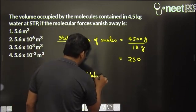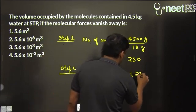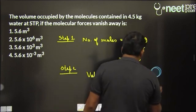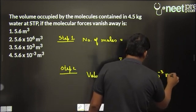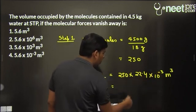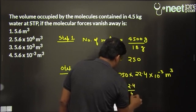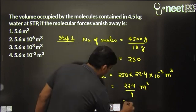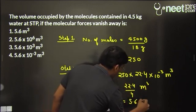So volume would be 250 into 22.4 liters. Now let us convert this liter into meter cube, into 10 to the power minus 3 meter cube. Now we have 250 divided by 1000, that means 1 by 4. So 22.4 divided by 4 meter cube, which would be exactly 5.6. 20 is 5, 2.4 is 6, 5.6 meter cube, right?